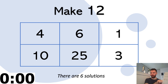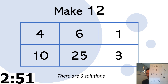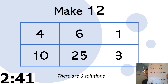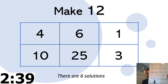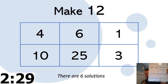What did you get? I got: three times four is 12; ten add six take away four is 12; 25 take away 10 is 15, take away four to get 11, then add one — that's 12; six add four is ten, add three is 13, take away one is 12. And this mad one: three times ten is 30, take away 25 gives five, add six to get 11, then add one to get 12.